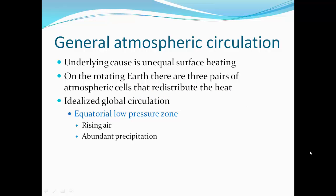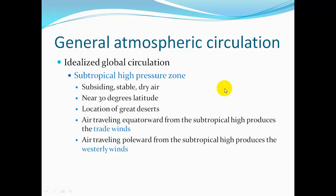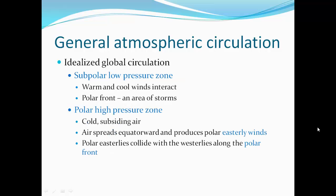In idealized global circulation: there's a low-pressure zone at the equator with rising air and lots of precipitation. Hot air rises, reaches the dew point, drops precipitation, then starts sinking in the subtropical high-pressure zone — subsiding, stable, dry air around 30 degrees latitude. That's the location of great deserts. Air traveling equatorward from the subtropical high produces trade winds; air traveling poleward produces the westerlies. The subpolar low-pressure zone is where warm and cool winds interact, and the polar front is an area of storms. The polar high-pressure zone has cold, subsiding air that spreads equatorward producing easterly winds, and polar easterlies collide with the westerlies along the polar front.